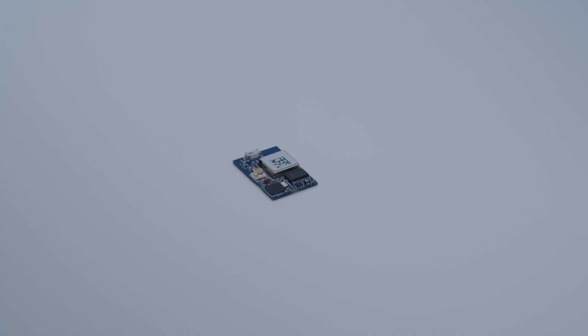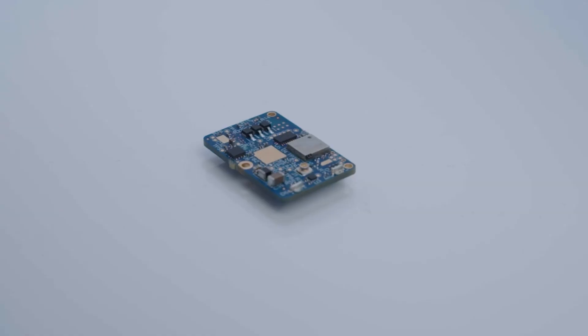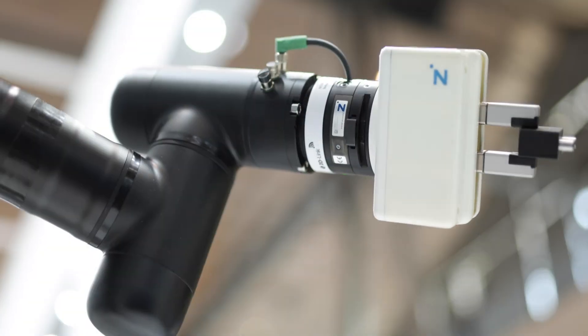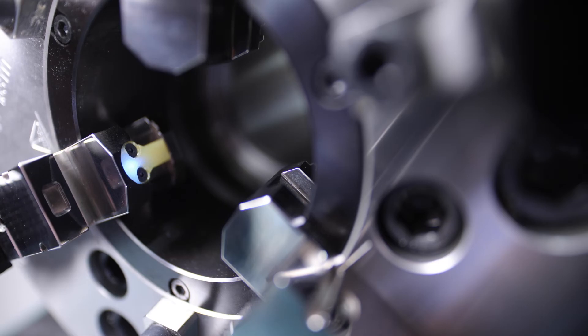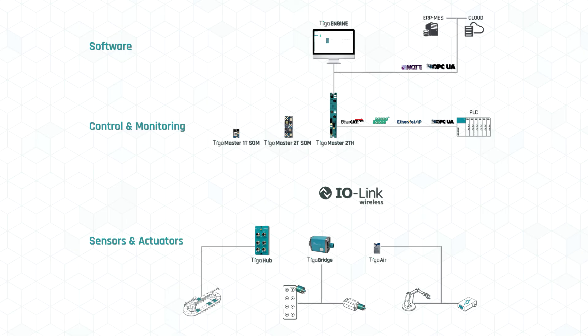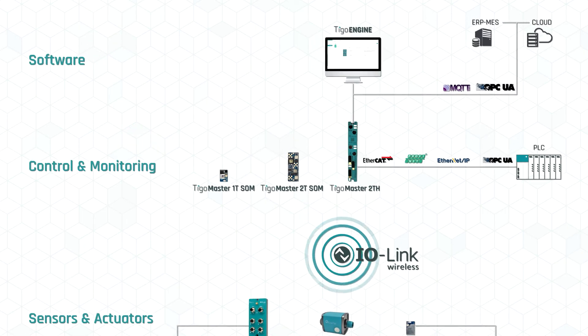TIGO Air and TIGO Bridge embedded modules are used for designing fully integrated IO-Link wireless sensors and actuators.